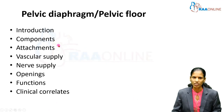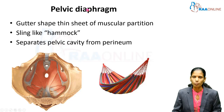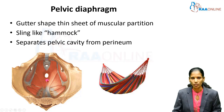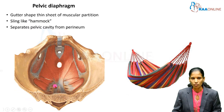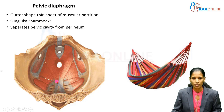We are going to discuss the pelvic diaphragm under the following headings: introduction, components, and attachment in the first part, followed by vascular supply, nerve supply, openings, functions, and clinical correlates in the second part. The pelvic diaphragm is a gutter-shaped thin sheet of muscular partition separating the true pelvis above and the perineum below. The arrangement of its muscle fibers resembles a hammock held in position by the anteroposterior diameter of the true pelvis.